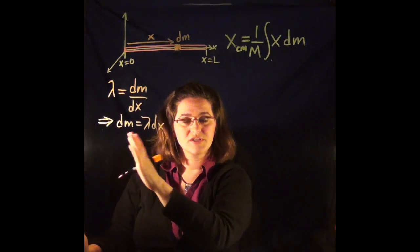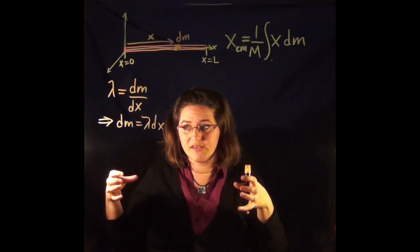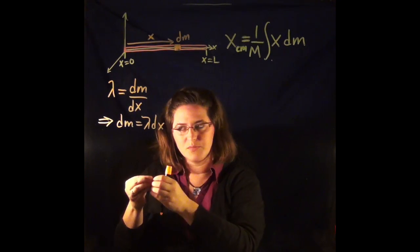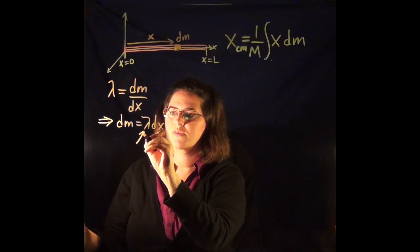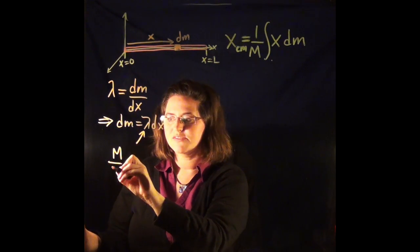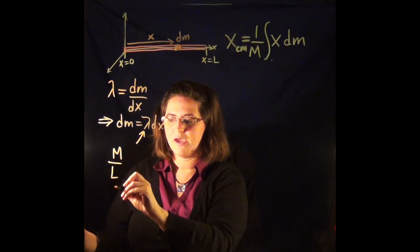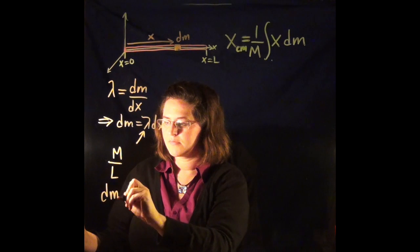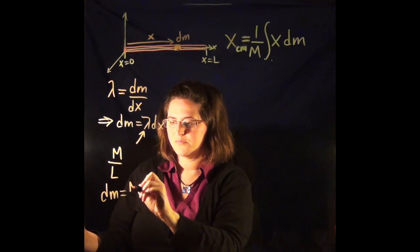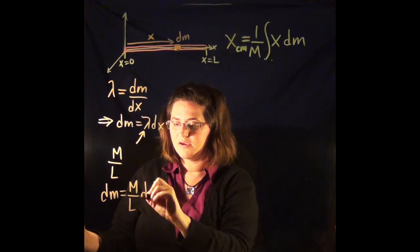Now I know that for the entire mass, the mass density should be the same for the whole mass, just as it would be for a little bit of mass. So for lambda, I can plug in the entire mass over the entire length. And now this dm is equal to the entire mass over the entire length times dx.